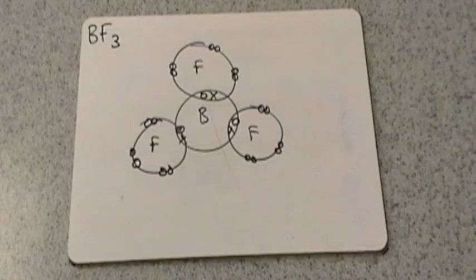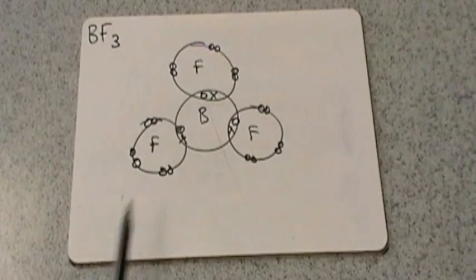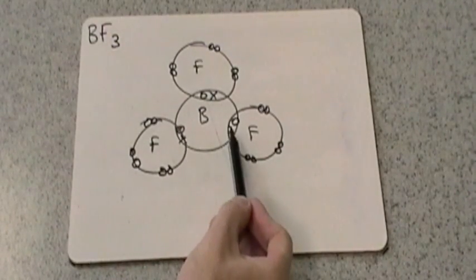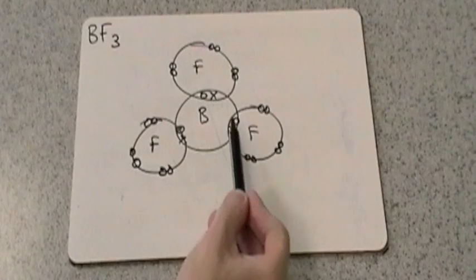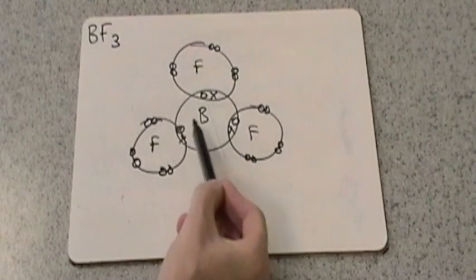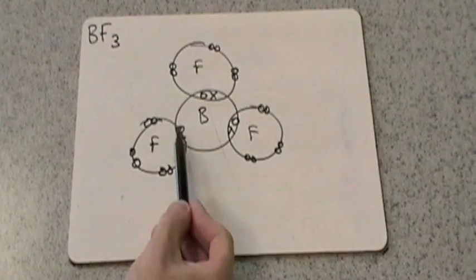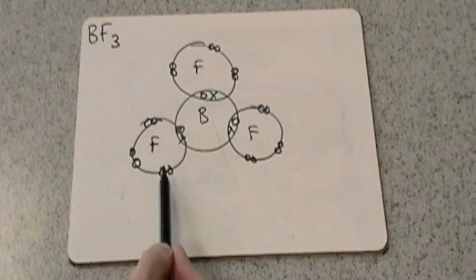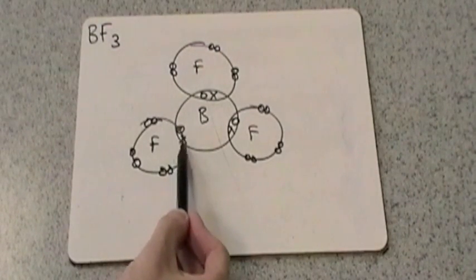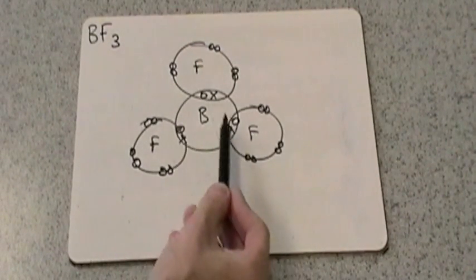So this is the example I've chosen to use. It's BF3 or boron trifluoride. So you can see there I've drawn the dot and cross diagram showing the outer shells only. Boron's got three electrons in its outermost shell. So they'll be the crosses. And fluorine has seven electrons in its outermost shell. And it uses one of those in the shared pair. So there's your covalent bonds.